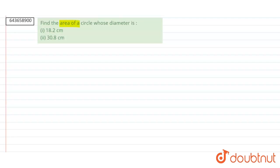The question is: find the area of a circle whose diameter is 18.2 cm and 30.8 cm.